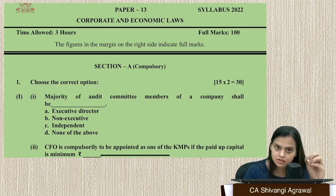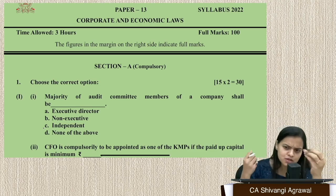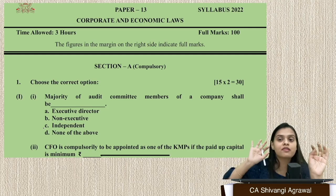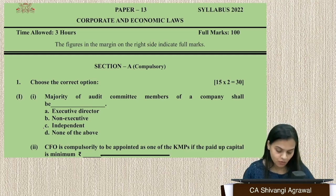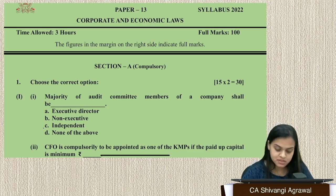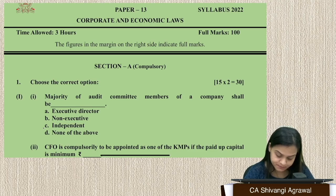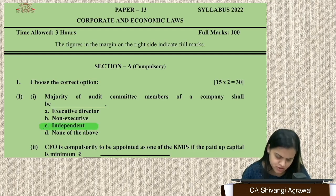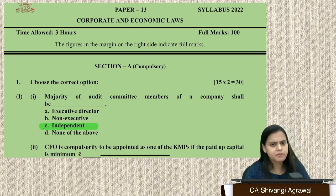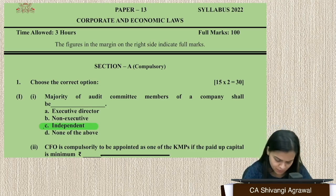I sincerely urge that when attempting Section A at the beginning, don't write the justification. Complete the entire paper first and then come back. Moving to Question 1: majority of audit committee members shall be — of course it has to be independent directors. The minimum requirement is three directors with independent directors forming a majority.